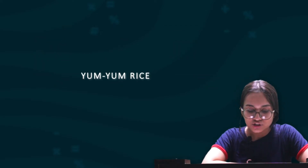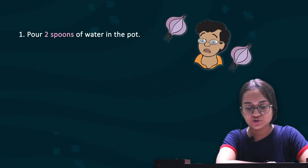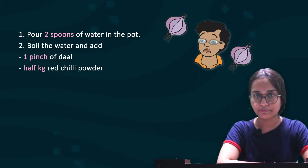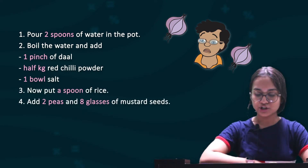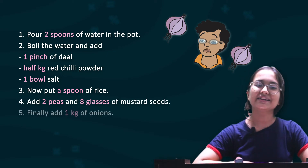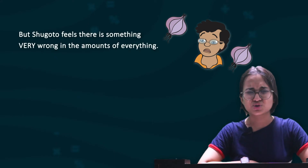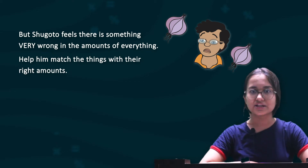Then we have 'Yum Yum Rice.' Shugoto heard about a new dish on the radio and wants to try making it. When he notes down the recipe, he gets confused. His notes say: pour 2 spoons of water in the pot, boil the water and add 1 pinch of dal, half kg red chilli powder, and 1 bowl of salt, then put a spoon of rice, add 2 pieces and 5 to 8 glasses of mustard seeds, and finally add 1 kg of onions. Shugoto feels something is very wrong with the amounts.